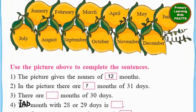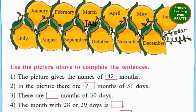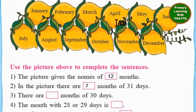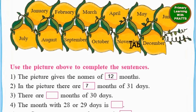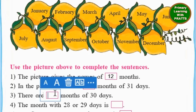The next one: there are how many months of 30 days? We know February does not have 30 days, and March has 31. So April, June, September, November. Let's count: 1, 2, 3, 4. Four months have 30 days.